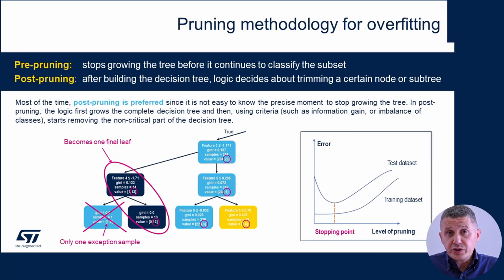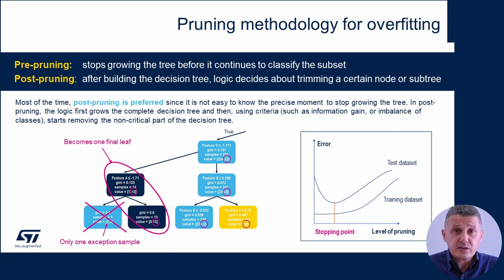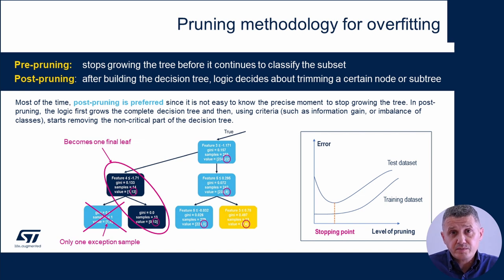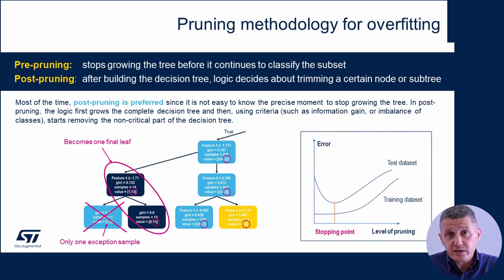One methodology to solve overfitting specific to the decision tree model is pruning. We can decrease the complexity of a decision tree by pruning branches that are not relevant — for example, branches that are used only a few times. We need to monitor when to stop this pruning process by checking accuracy on both the training and test datasets.